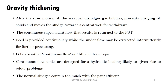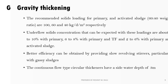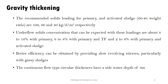The feed is introduced continuously and withdrawal is done using a fill-and-draw type operation. The recommended solid loading for a combined primary and activated sludge at a ratio of 60 to 40 is 160 kg per day per meter square. Underflow solid concentration is 8 to 10% for primary sludge, 6 to 8% for primary and TF sludge, and 2 to 6% for primary and activated sludge.